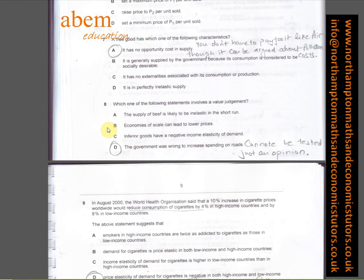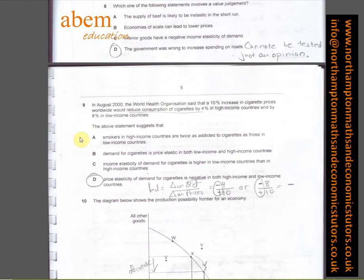Question number eight: which one of the following statements involves a value judgment? Now we know value judgments cannot be tested. It is just an opinion. Therefore, D is the answer because the government was wrong to increase spending on roads.